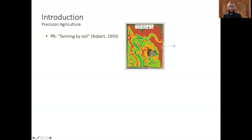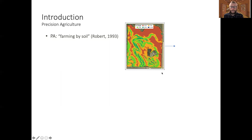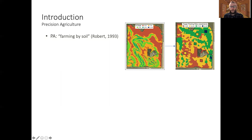Just a quick background on precision agriculture. The initial idea of precision agriculture was introduced in the 90s as various technologies started becoming more popular on farms. This led to the notion of being able to farm by soil, whereby a farmer could get a soil map of their field and adjust their input rates based on those soil attributes across a field. This is the initial ideal of precision agriculture.